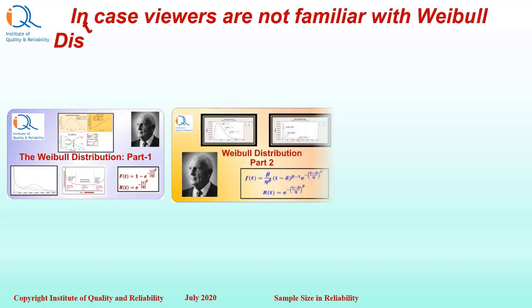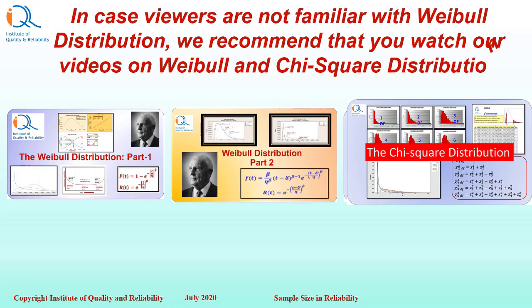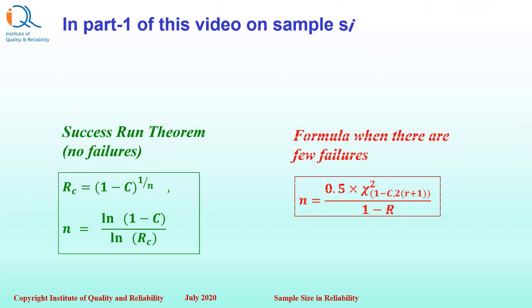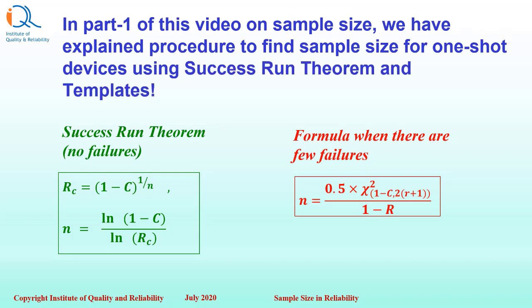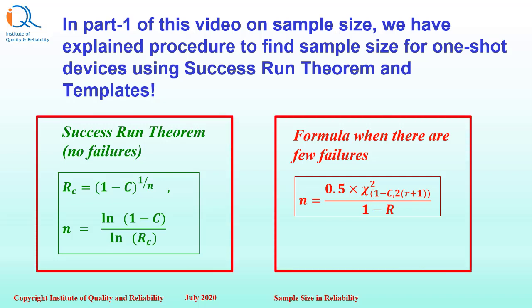In case viewers are not familiar with Weibull distribution, we strongly recommend that you watch our videos on Weibull and Chi-square distribution before watching this video. Links are provided in the description. In part 1 of this video on sample size, we explained procedure to find sample size for one-shot devices using Success Run theorem and our templates. We demonstrated use of these two formulae in part 1.